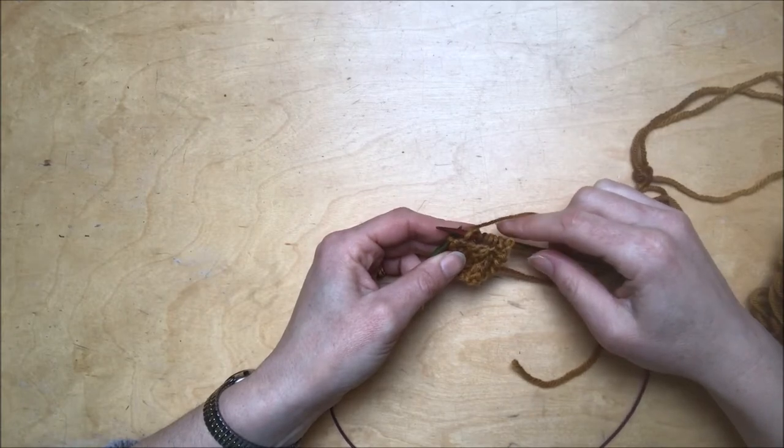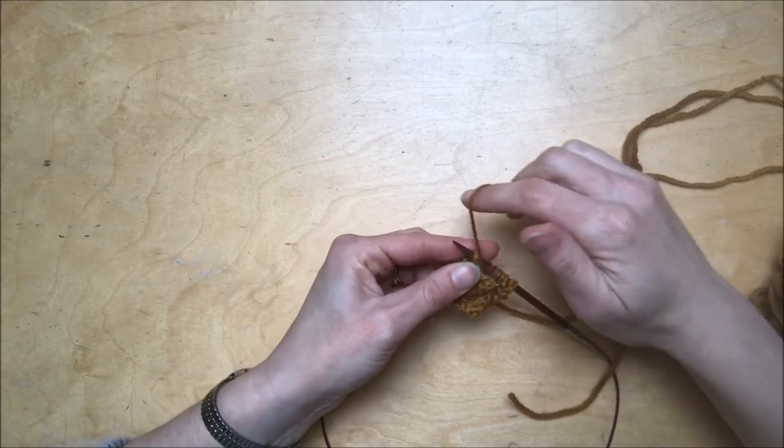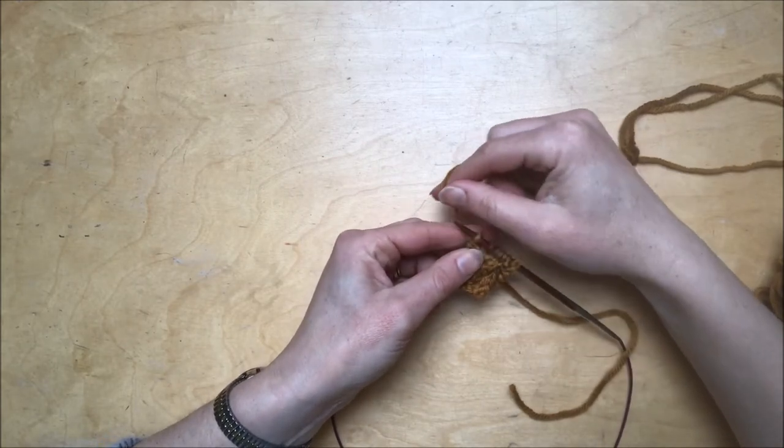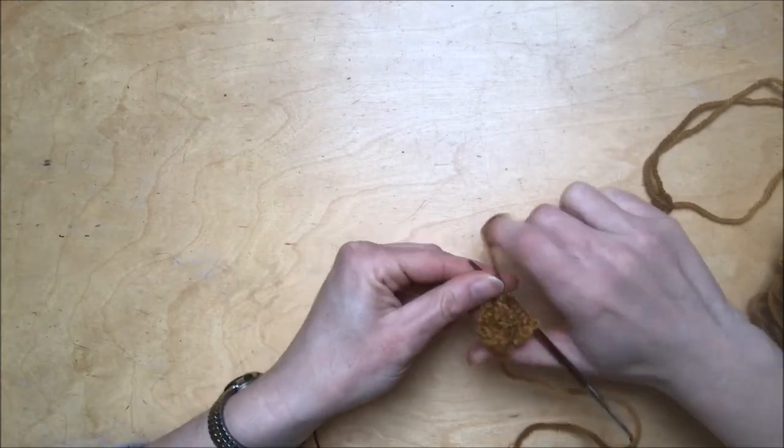So you can see it uses a fraction of the yarn. Let me show that again. Instead of going over the needle like a typical purl stitch, we're going to go under the needle and then continue on as normal.